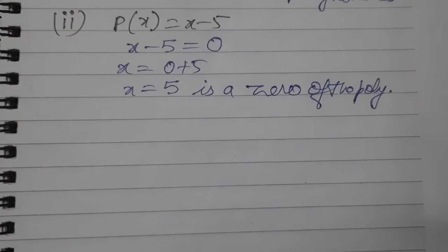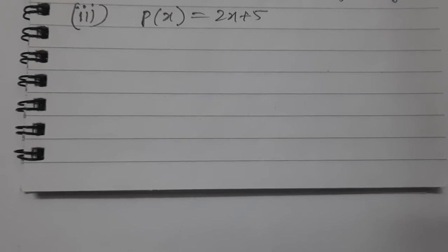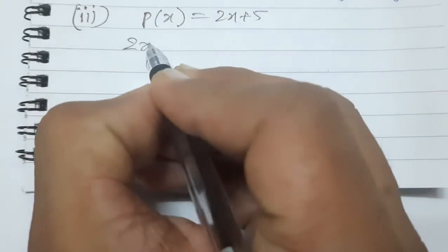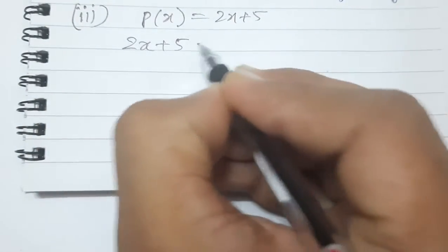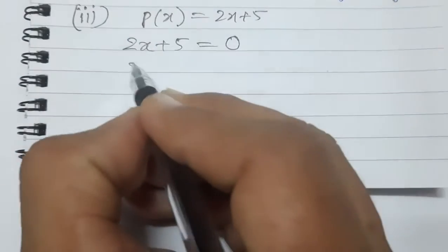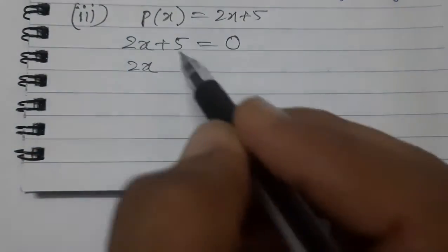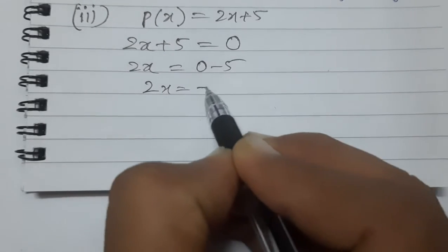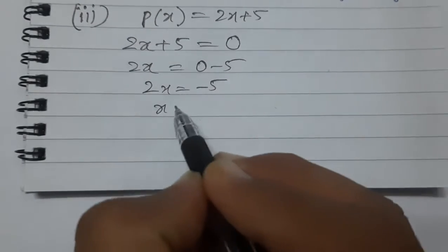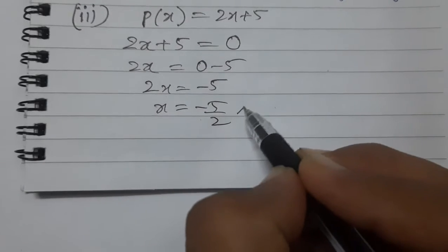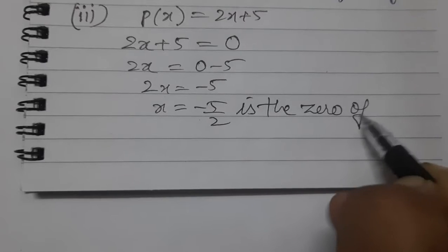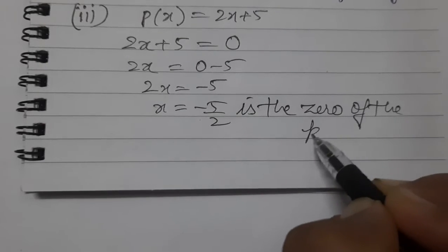Now the third one. See this: P(x) equals 2x plus 5. So what do we do to find the zero? Put 2x plus 5 equals zero. Then 2x equals minus 5. Therefore x equals minus 5 by 2. This is the zero of the polynomial.